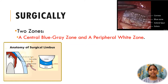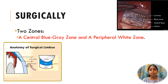Surgically, the limbus is divided into two zones: a central blue-gray zone and a peripheral white zone. The central zone corresponds to the area connecting Bowman's layer and Descemet's membrane. The peripheral zone overlies the trabecular network.